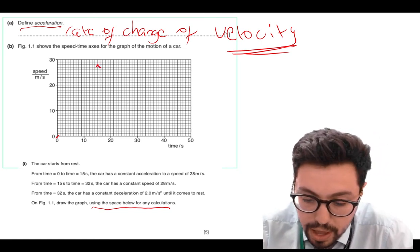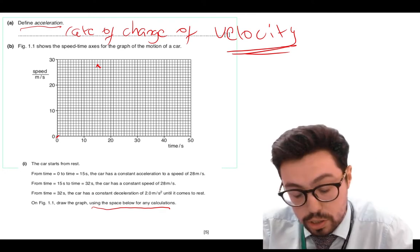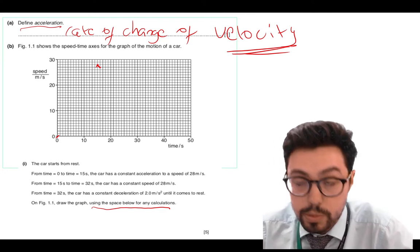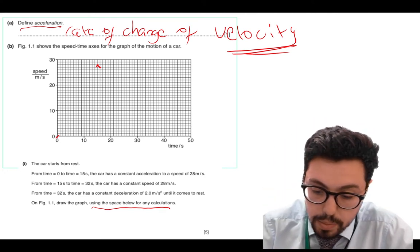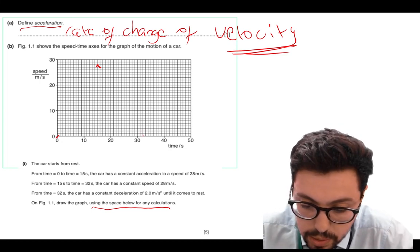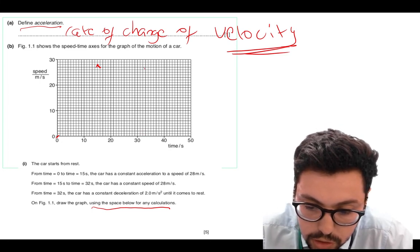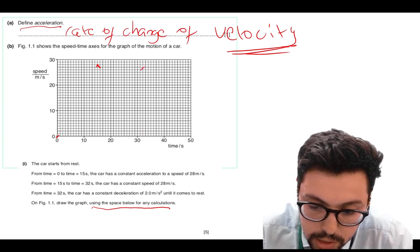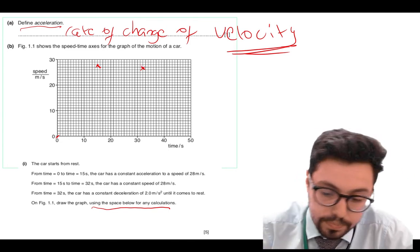From 15 to 32 is a constant speed, so that will be shown by a straight horizontal line until 32 seconds. Again, at 32 seconds I'm going to have a straight horizontal line to there, so I'm going to mark that on as well.